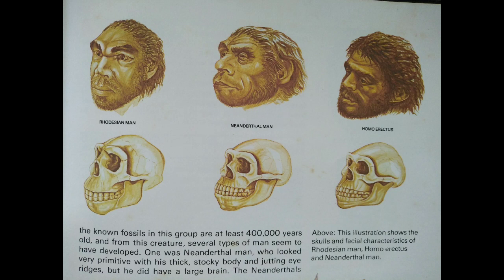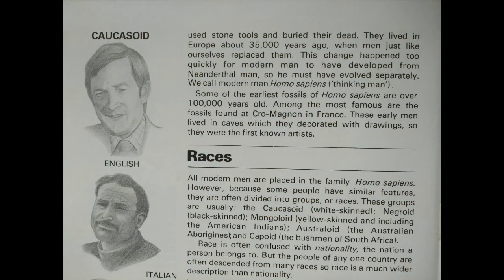This illustration shows the skulls and facial characteristics of Rhodesian man, Homo erectus and Neanderthal man. The Englishman, Italian and Indian above are all Caucasians — this racial group is widespread in Europe, the Middle East, North Africa and India, and they have skin colors ranging from fair to dark.